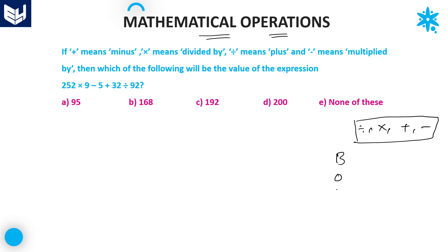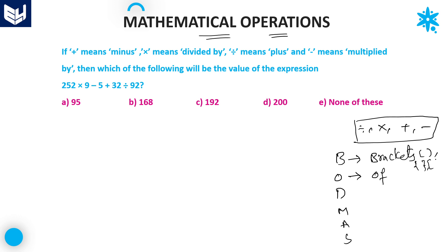BODMAS rule — most people know about it. B stands for Brackets, and it is the order of priority to solve problems whenever these kinds of problems occur. O is nothing but OF. In brackets, we have 3 types: first priority is for small brackets, then flower brackets, then square brackets. Next priority is for OF, which is multiplication only. Then D for Division, M for Multiplication, A for Addition, and S for Subtraction.